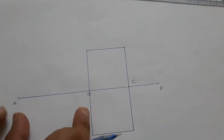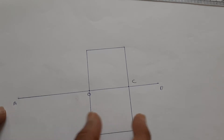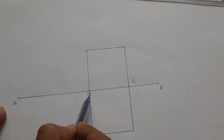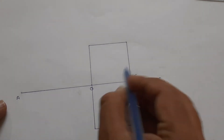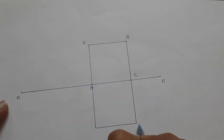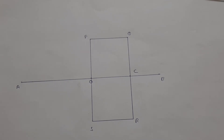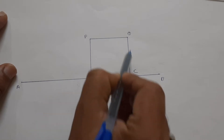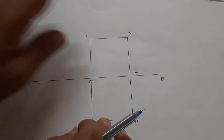OA is half of the transverse axis. AB is the full transverse axis. OA is half of the transverse axis, and OC is abscissa. Indicate the names also — I will indicate P, Q, R, S. So P, Q, R, S are marked. QR is the double ordinate. Now I need to divide CQ and CR into equal number of parts.